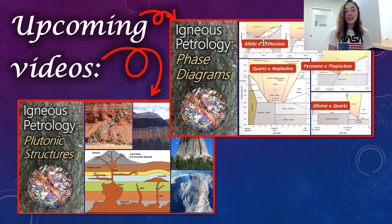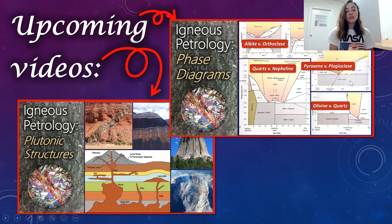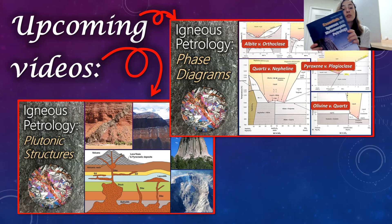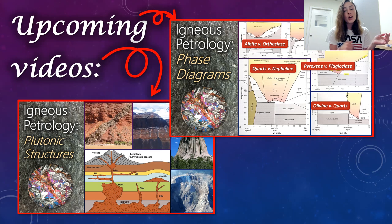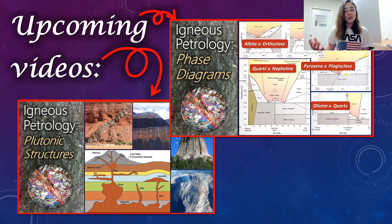That's it for volcanic structures in this igneous petrology playlist. Next time we'll cover plutonic igneous structures, and the following video will address phase diagrams. The textbook I'm using to make this lecture is linked in the description — it's 'Essentials of Igneous and Metamorphic Petrology' by Ronald and Carol Frost. If you're still watching, comment below what your favorite volcanic igneous structure is. Personally, I love the ropey pahoehoe lava structures — it's amazing to me that lava literally cools like that. Thanks for sticking around!